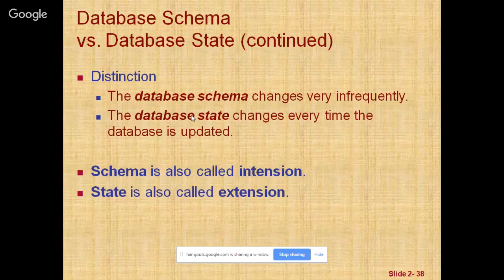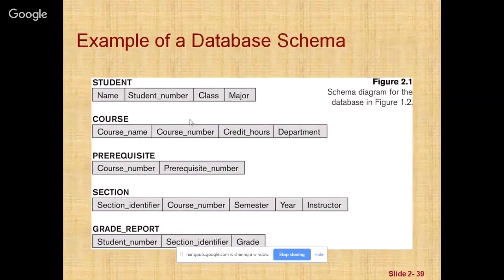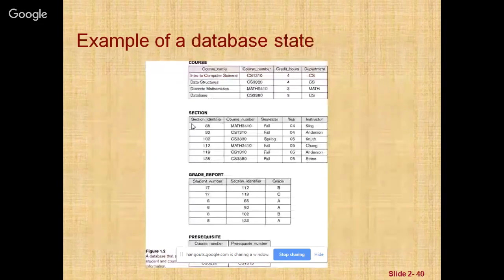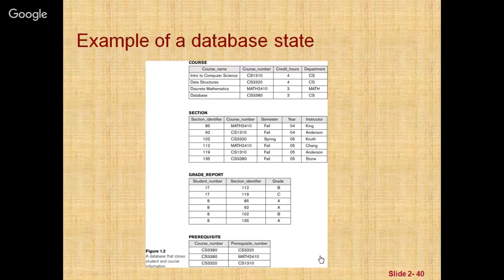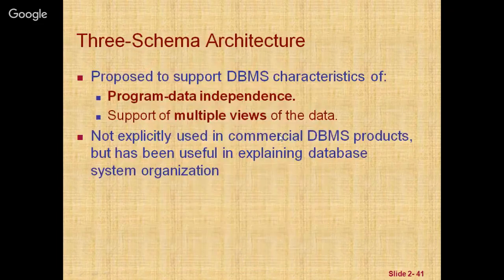The schema is also called the intension, while the database state is also called the extension. This is an example of the database schema, and the earlier example showed a database state.